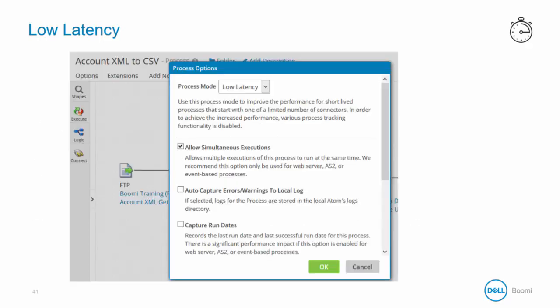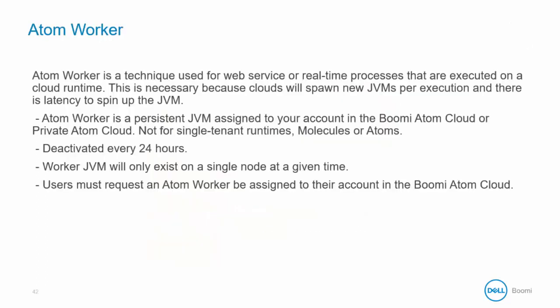Low latency is under the options tab on the process canvas. The dropdown next to the process mode is either general or low latency. The atom worker, mentioned earlier, is a technique used for web service or real-time processes that are executed on the cloud runtime. Atom workers are related to a cloud where the default behavior is forked execution, and each execution spawns a new JVM.